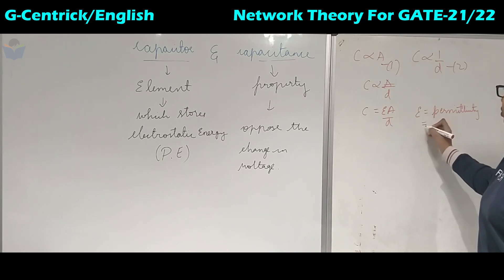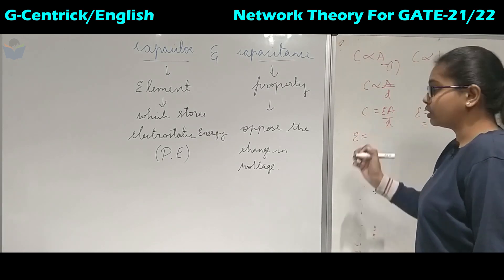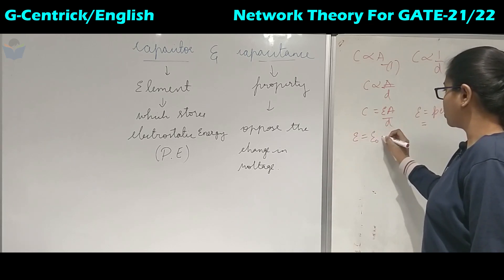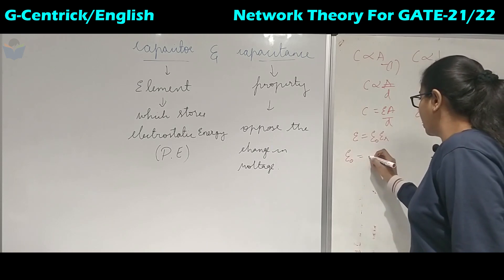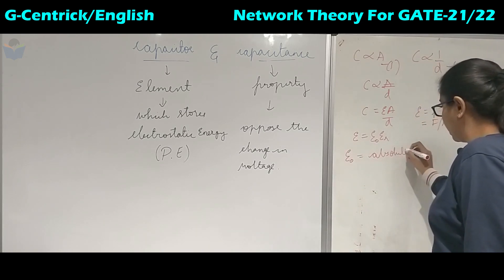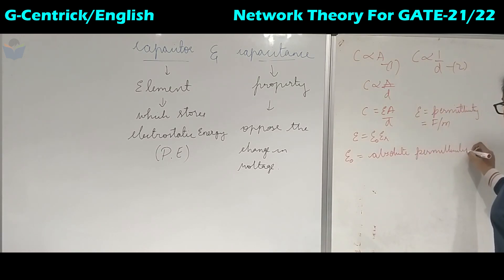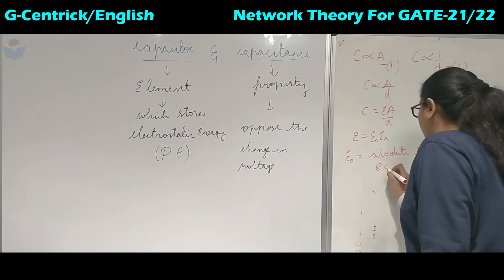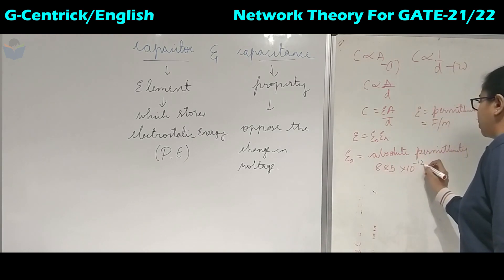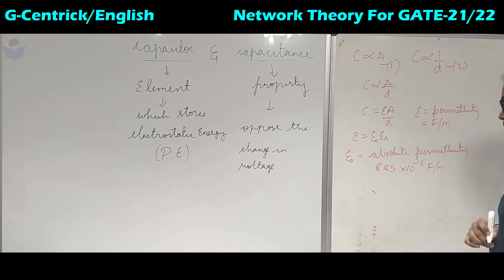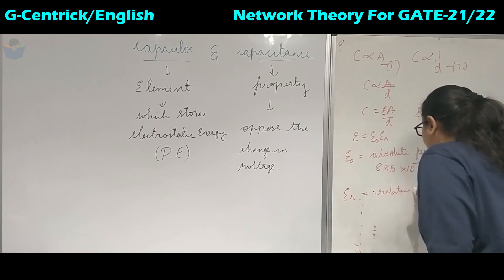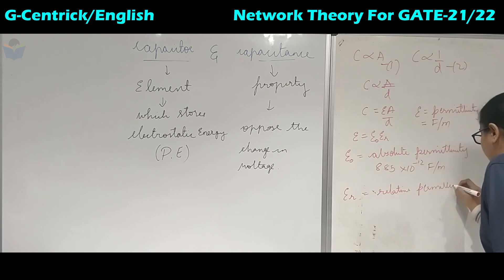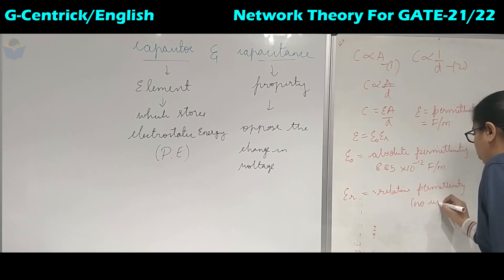Epsilon is the product of epsilon-zero and epsilon-R, and it has the unit farad per meter. Epsilon-zero is the absolute permittivity, which has the value 8.85 × 10⁻¹⁰ farad per meter. Epsilon-R is the relative permittivity and it has no unit.